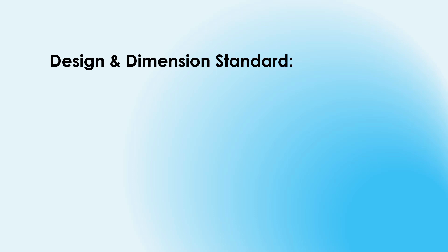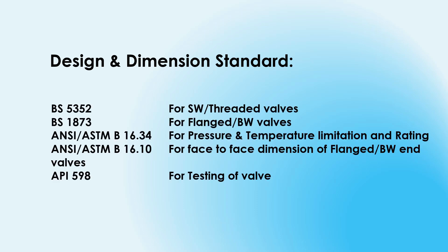Design and dimension standards: BS 5352 for socket-weld and threaded valves; BS 1873 for flanged or butt-weld valves; ANSI/ASME B16.34 for pressure and temperature limitations and ratings; ANSI/ASME B16.10 for face-to-face dimensions of flanged and butt-weld end valves; API 598 for testing of valves.